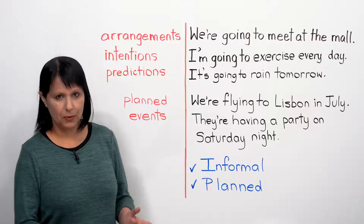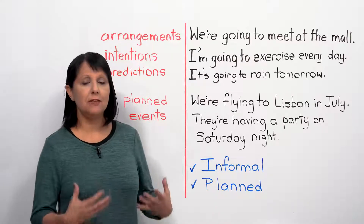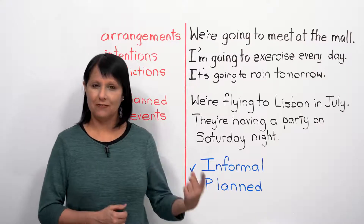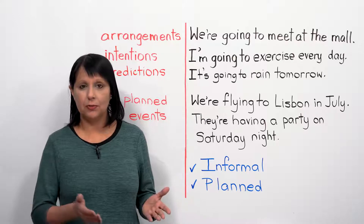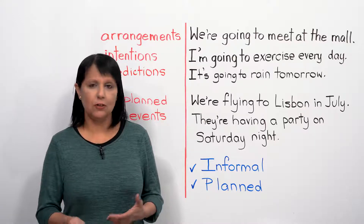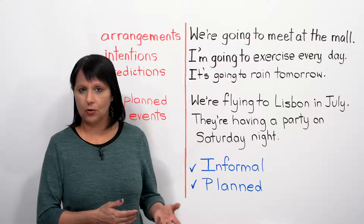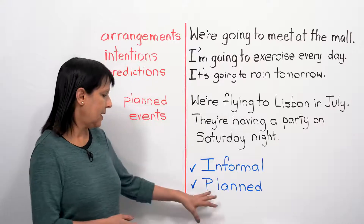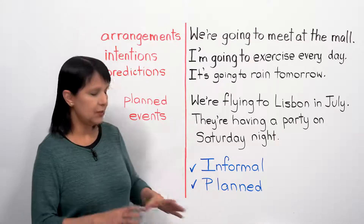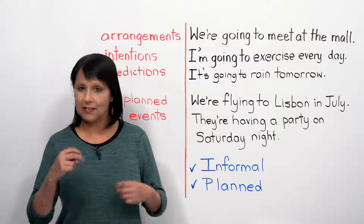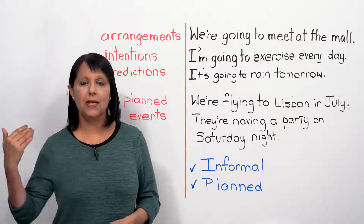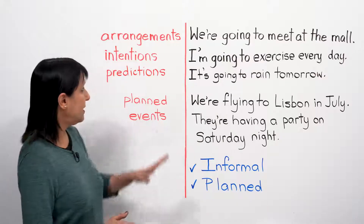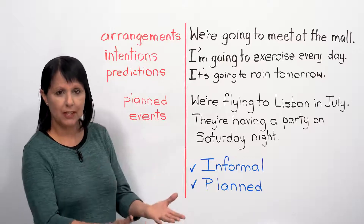The most important thing to remember is that we use these in informal situations - informal communication, spoken or written. Informal doesn't have to mean only social situations; it can also be at work with your colleagues or with clients who are good friends. The other key point is that these should be planned situations - not something you just decide, but something where you've made a plan in advance. Those are the two critical points.